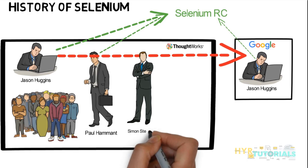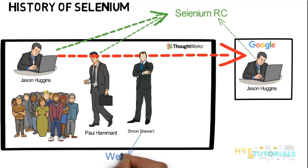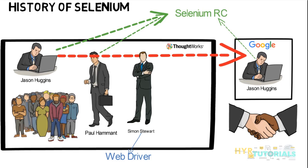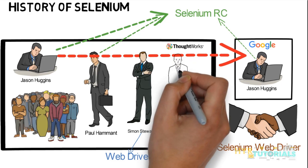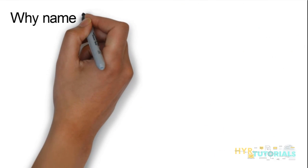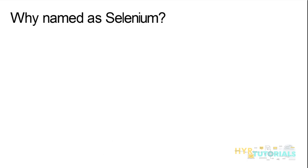There was another guy called Simon Stewart who started developing a separate product called WebDriver, also at ThoughtWorks. Later, at a test conference, developers from ThoughtWorks and developers from Google had a meeting and decided to merge Selenium RC and WebDriver, naming it Selenium WebDriver. This happened in 2009. Around the same time, another person at ThoughtWorks named Philippie Hankrow started developing Selenium Grid. That is how Selenium and its components were developed.